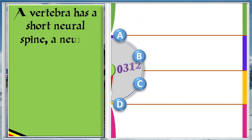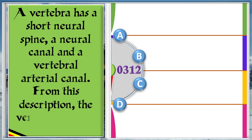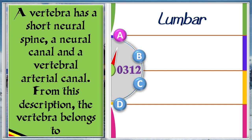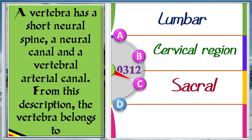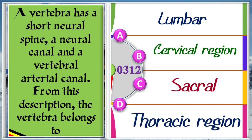A vertebrae has a short neurospine, a neurocanal, and a vertebral artery canal. From this description, the vertebrae belongs to A: Lumbar. B: Cervical region. C: Sacral. D: Thoracic region. And the answer is B, cervical region.